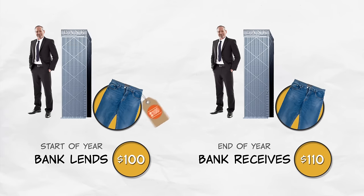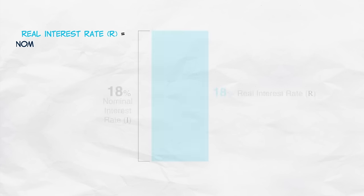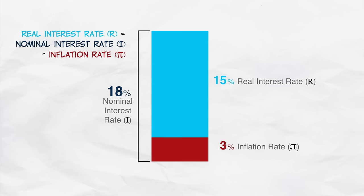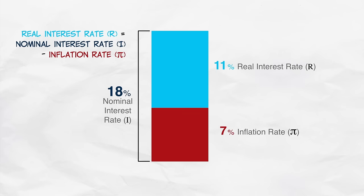That looks pretty good on paper. But during the year, money has become less valuable. Due to inflation, what used to cost $100 now costs $110. So what is the bank's real return? Zero. More generally, we can write that the real interest rate is equal to the nominal rate — the rate charged on paper — minus the inflation rate. Inflation reduces the real return on a loan.